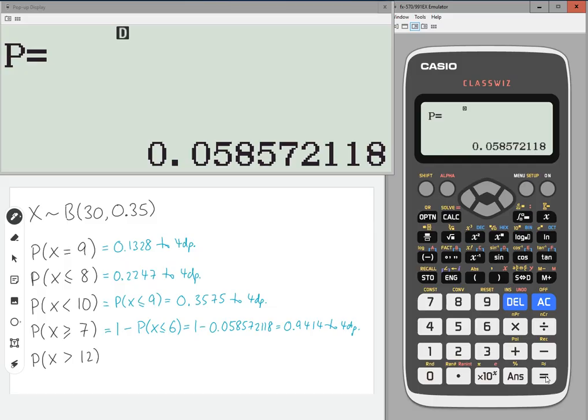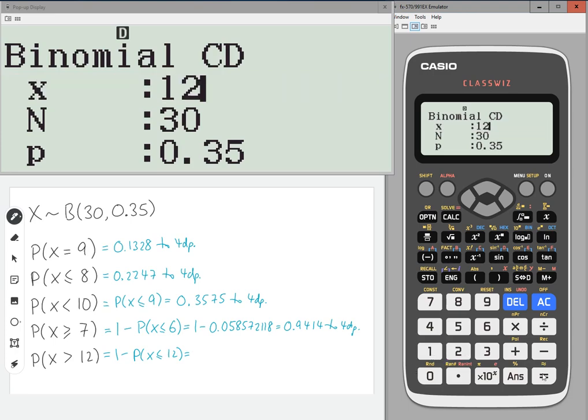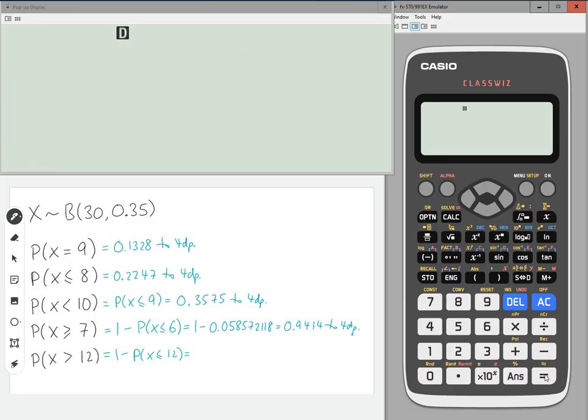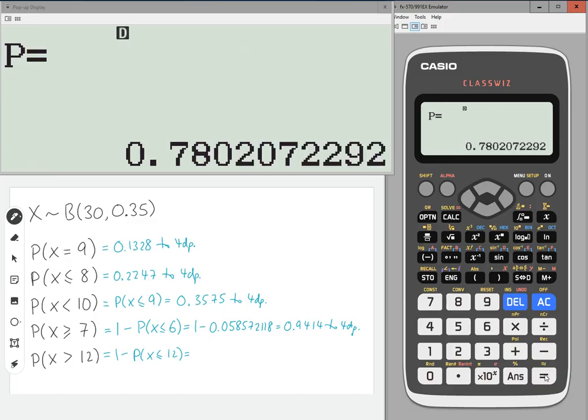So, we're going to get another example here. The probability of X being greater than 12, that's 13 and above. So, I don't want 0 to 12. So, that's 1 take away less than or equal to 12. Press equals, change the X to 12. Press equals. And we've got 1 take away 0.7802072292. And I'm going to use the same trick.